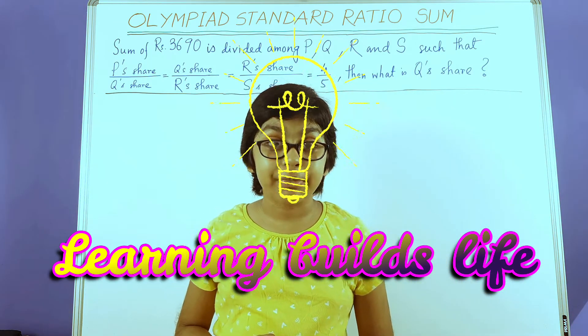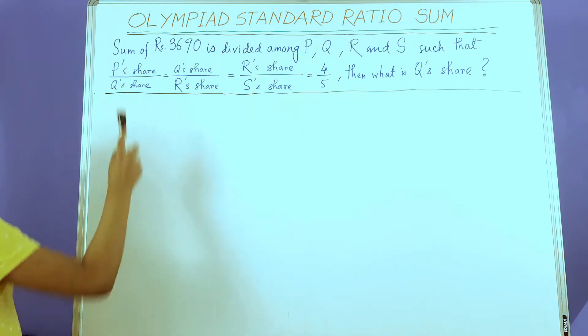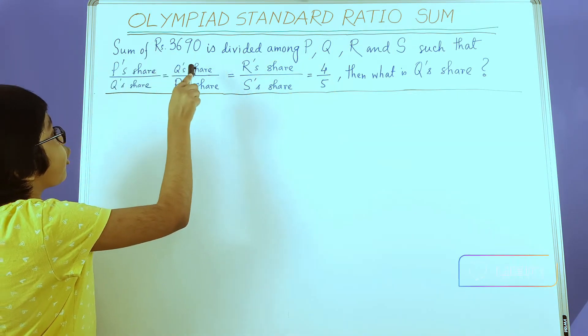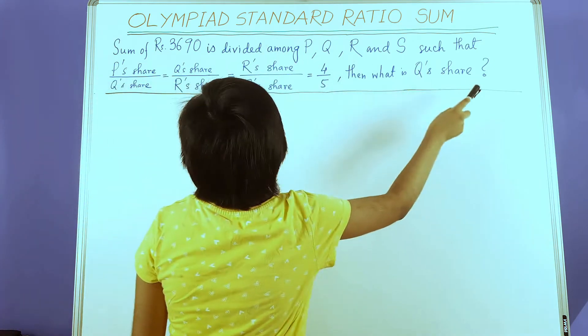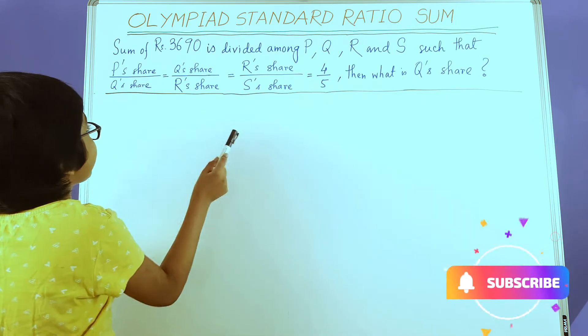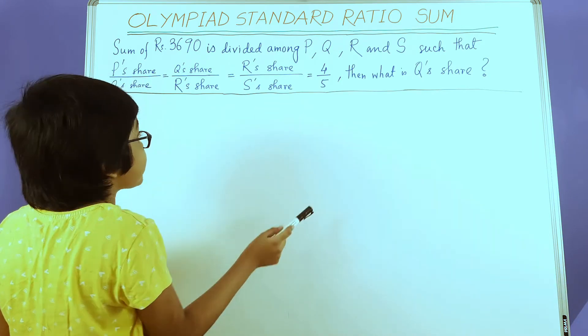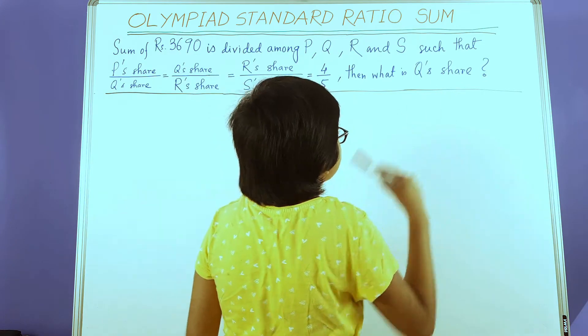I'm going to read the sum before I can begin. The sum is here. Sum of Rs. 3690 is divided among P, Q, R, and S such that P's share by Q's share equals Q's share by R's share equals R's share by S's share equals 4 by 5. Then what is Q's share?